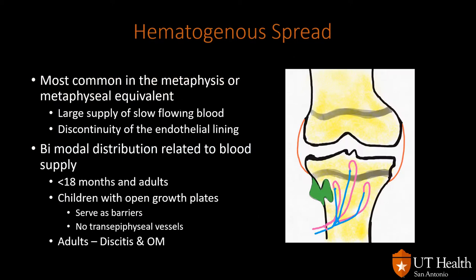Hematogenous spread is the most common way bacteria infect bone, and this usually happens at the metaphysis because blood flow in that region is very slow and the endothelium has discontinuity, making it permeable. Bacteria exit the vessels and enter the bone through those gaps in the endothelium. There is a bimodal distribution related to blood supply, common in children under 18 months and in adults.